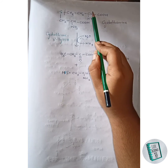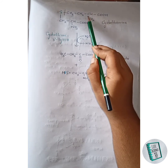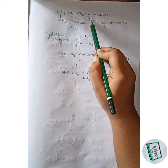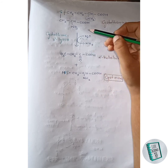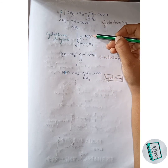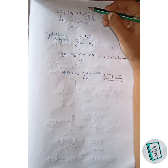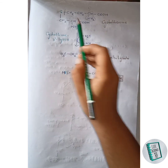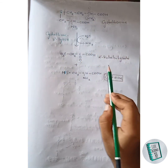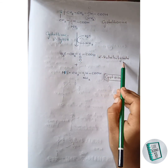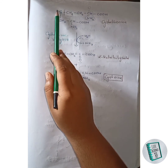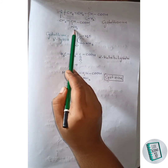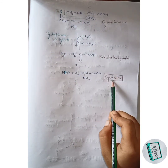The NH2 and H group are removed as NH3, and the remaining oxygen of the water molecule attaches with the carbon as a double bond, releasing this portion as alpha-ketobutyrate. The remaining portion is released as cysteine. So this is all about the cysteine synthesis.